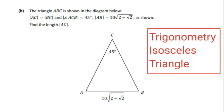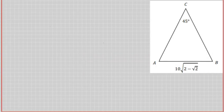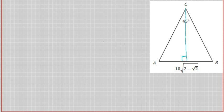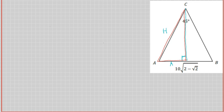In part b we move on to trigonometry with a triangle. It's an isosceles triangle, so as with Junior Cert or Leaving Cert, we draw a bisector line down the center. This splits the base into two equal halves and creates a right-angle triangle, which we can work with using trig functions to find AC, the hypotenuse.